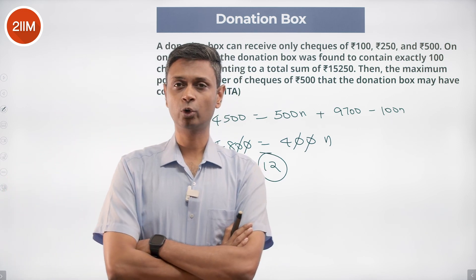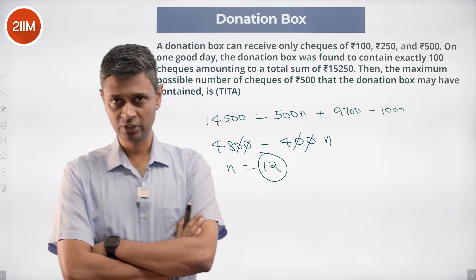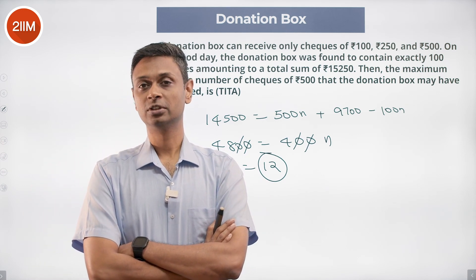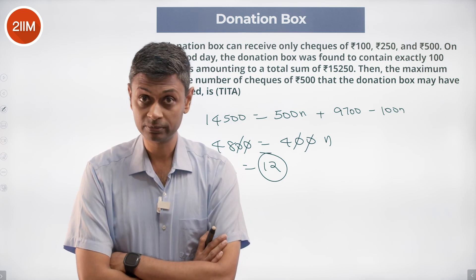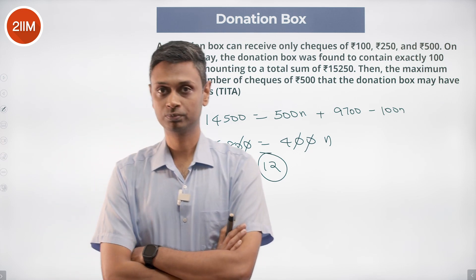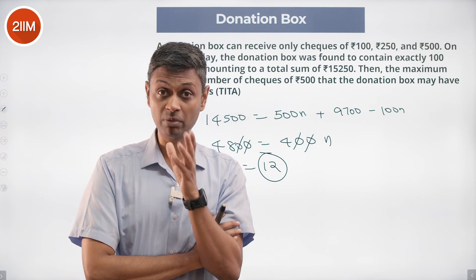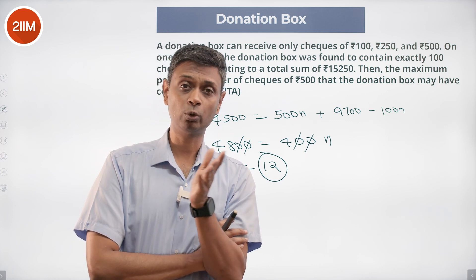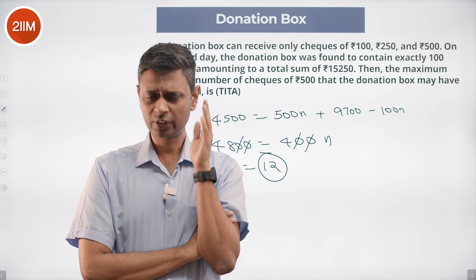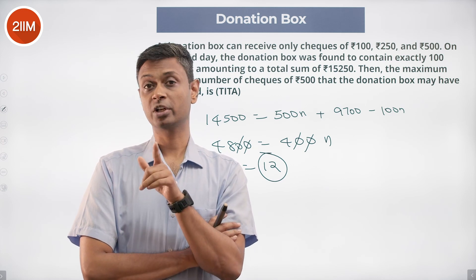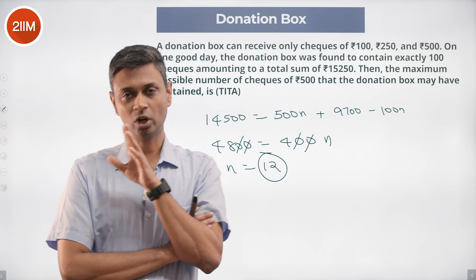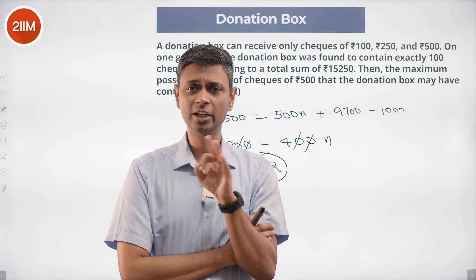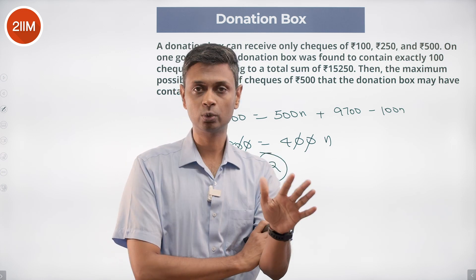The rest are 100-rupee notes. We can achieve this objective with 12 five-hundred rupee notes; 13 or more is not possible. So the maximum is 12. To summarize: if you want maximum 500-rupee notes, the remaining money should come from 100-rupee notes as much as possible. Using only 500 and 100 is not possible; including one 250-rupee note doesn't work either; but including three 250-rupee notes works.